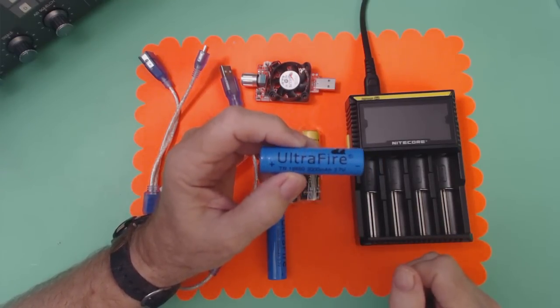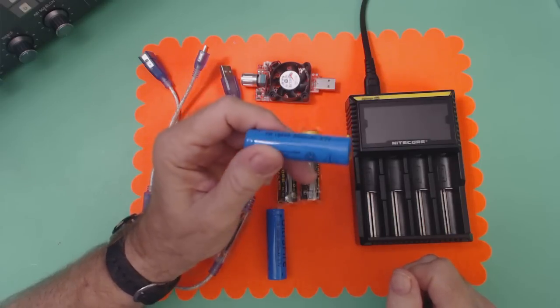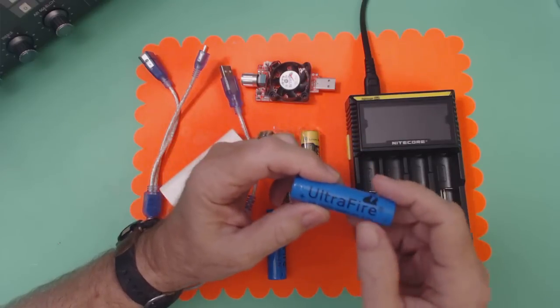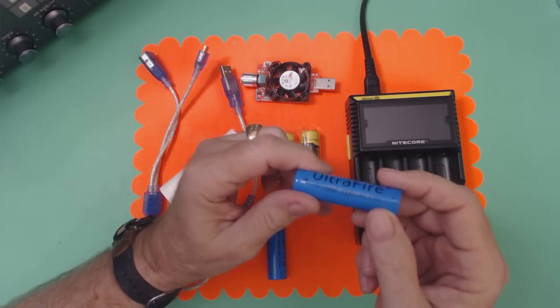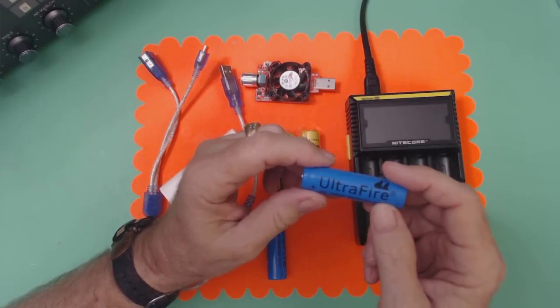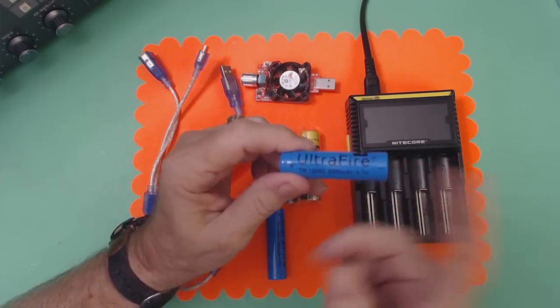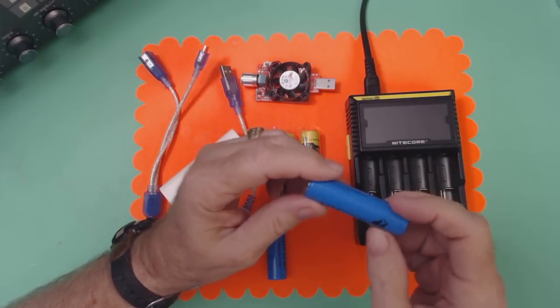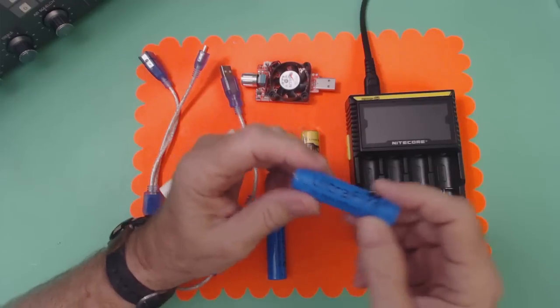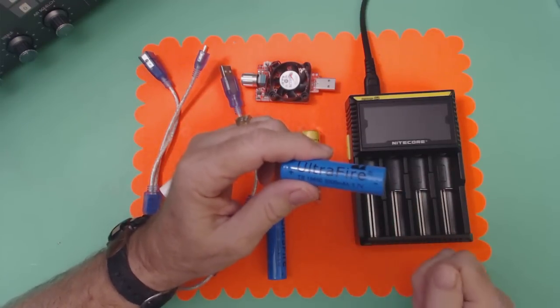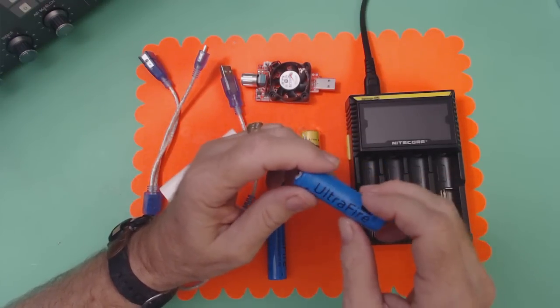Such as the Tecsun PL-880 uses one of these batteries, and a lot of your high-powered flashlights are using these batteries. So I'm starting to collect these because I need them for my radios and my flashlights.